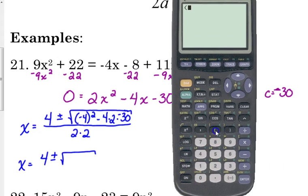Then square it, minus 4 times 2 times negative 30, and that gives us 256. And that's over 2 times 2 which is 4.